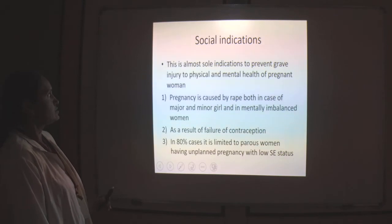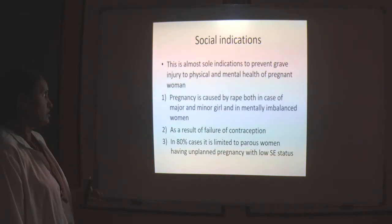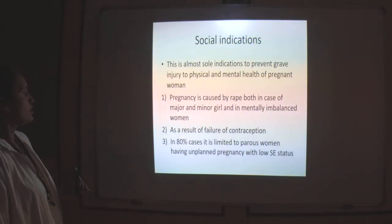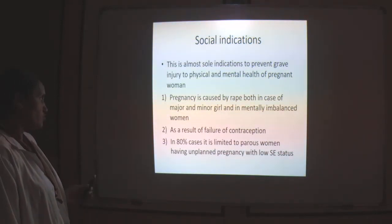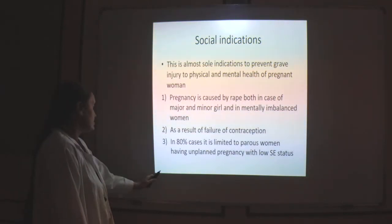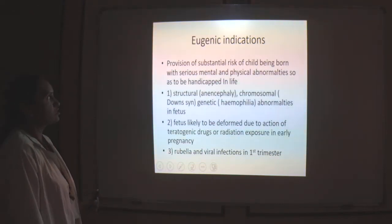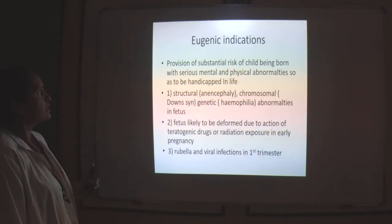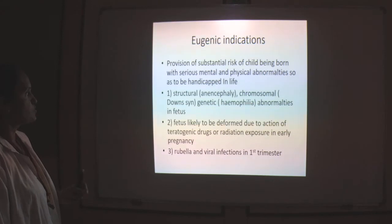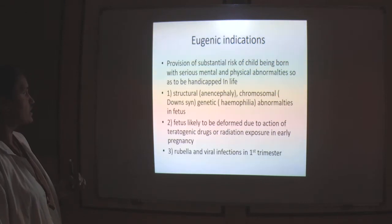Social indications are to prevent grave injury to the physical or mental health of the woman — that is, pregnancy caused by rape, in case of a major or minor girl, in case of a mentally imbalanced woman, or if it is the result of failure of contraception. In 80% of cases, it is limited to parous women having a grand multiparity with low socioeconomic status. Eugenic indications are where there is substantial risk of the child being born with serious mental and physical abnormalities, like structural or chromosomal abnormalities, or the fetus affected by teratogenic drugs, radiation exposure in early pregnancy, or rubella and viral infection in the first trimester.